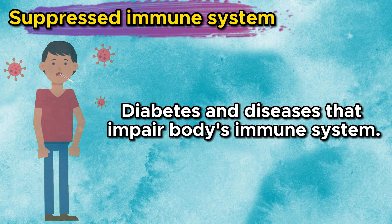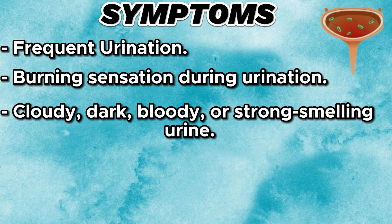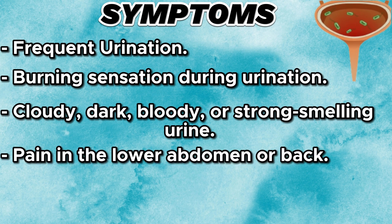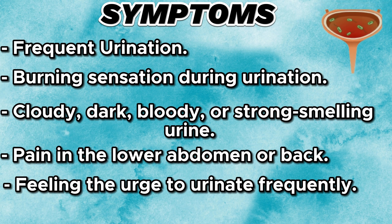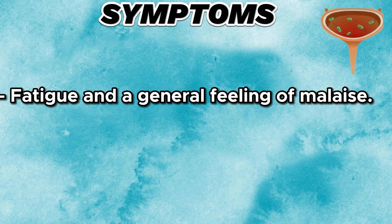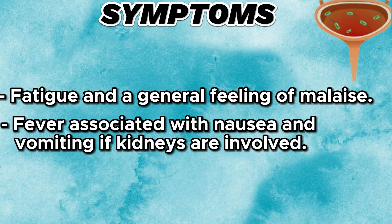Now let's discuss the common symptoms of a UTI: frequent urination, a burning sensation during urination, cloudy, dark, bloody, or strong-smelling urine, pain or discomfort in the lower abdomen or back, feeling the urge to urinate frequently but passing only small amounts of urine, fatigue and a general feeling of malaise, and fever associated with nausea and vomiting if the kidneys are involved.